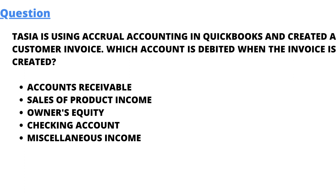We have 5 options here: Account Receivable, Sales of the Product Income, Owner Equity, Checking Account, and Miscellaneous Income.